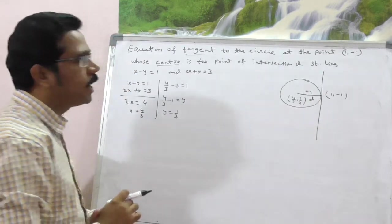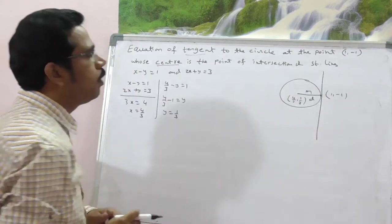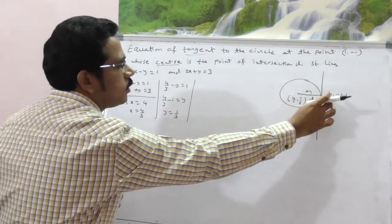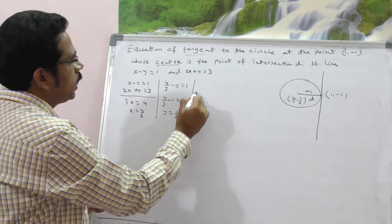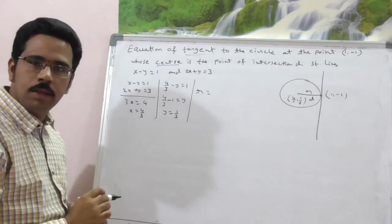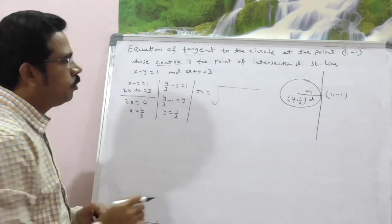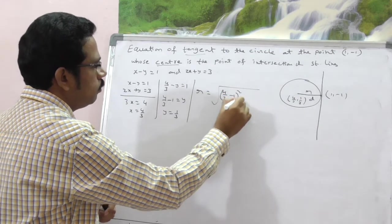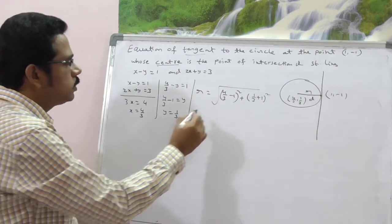So, first I am going to calculate radius. Radius is nothing but distance from center to any point on the circle. So, here we have center as well as one point on the circle, that is nothing but (1, -1). You can calculate radius easily. Now, what is radius? Distance between the two points, what is that? 4 by 3 minus 1 whole square plus 1 by 3 plus 1 whole square.